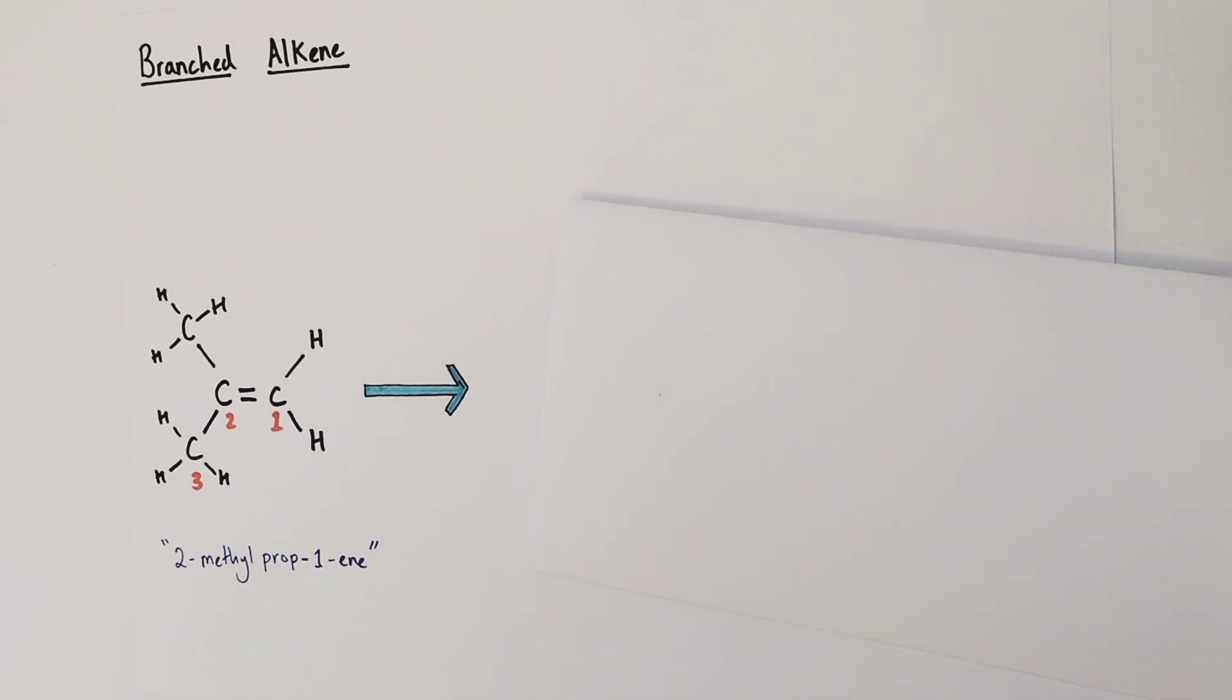Let's have a go now at a branched alkene rather than a branched alkane. The molecule I've chosen this time is 2-methylpropene. The key thing is it has a double bond between the carbons in the first and second positions. Now what I'd like to do is have a go at this before I reveal the answer. So draw that right now and the reveal will happen in literally two seconds time.